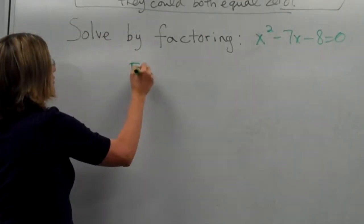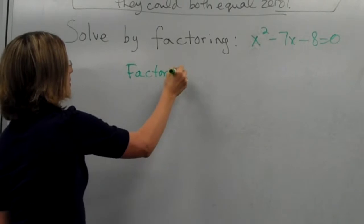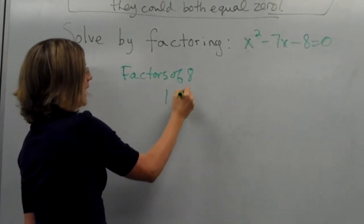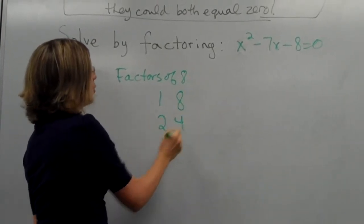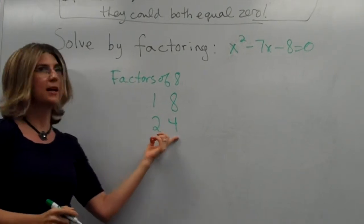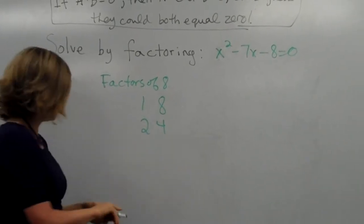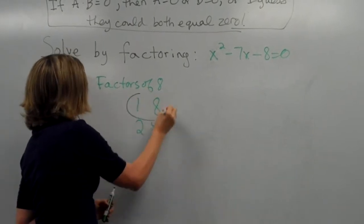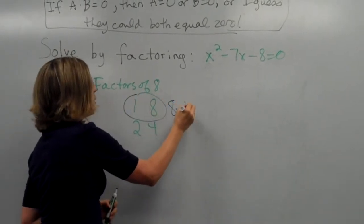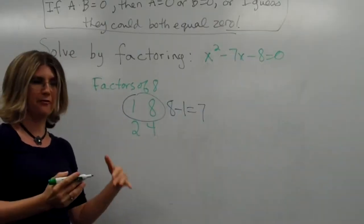So, let's look at the factors of eight. They are one and eight, and two and four. Two minus four gives us negative two, or four minus two gives us two, so that cannot be it. But, if we think about this as eight minus one, that will give us seven. So, let's use that to factor.